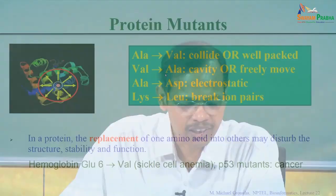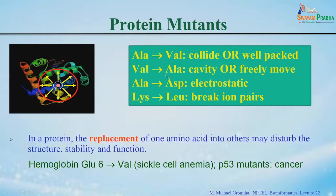If you mutate valine to alanine it can create a cavity, destabilizing the protein, or the residue can freely move. If you mutate alanine to aspartic acid it may either make electrostatic interactions or may destabilize. So if you mutate a specific residue in your protein it may alter the structure, alter the stability, as well as alter the function. Some mutations may also lead to diseases.